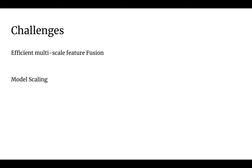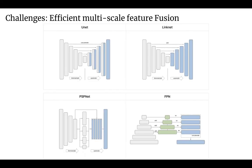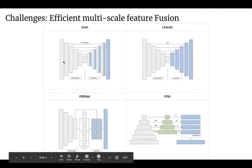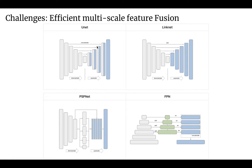Let's get a feel for the problem of multi-scale feature fusion. Generally, when you look at detection or segmentation architectures, you have some kind of encoder-decoder framework where you have a single encoding pathway and then a decoding pathway that takes in features from the encoder. The problem in these types of architectures is that you only create low-level features once.